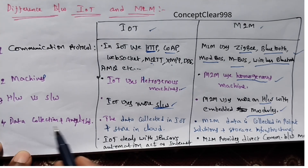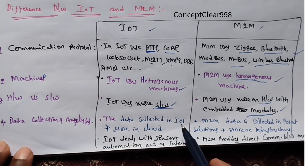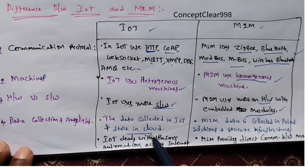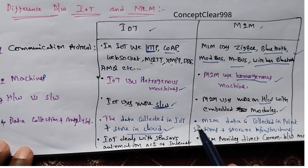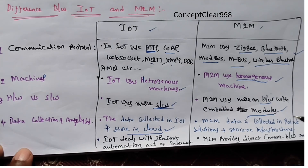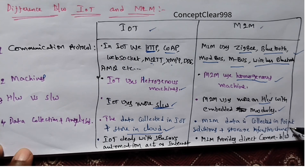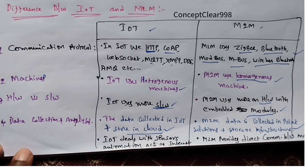The fourth aspect is data collection and analytics. In IoT, data is collected from devices and stored in the cloud. In M2M, data is collected in point solutions and stored locally in on-site infrastructure.